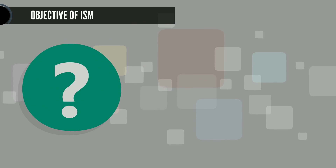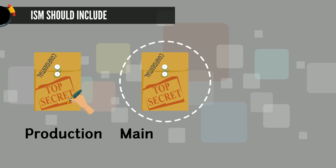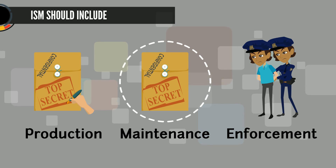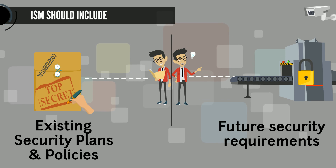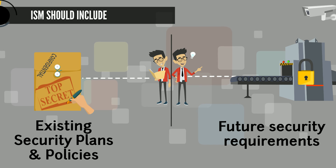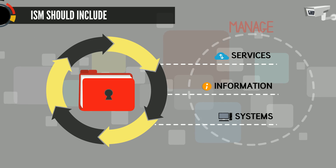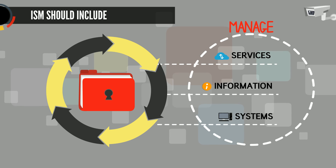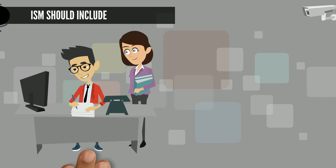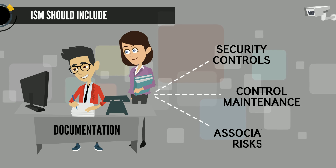What should be included in an ISM? The ISM process should include the production, maintenance, distribution and enforcement of an information security policy and supporting security policies. It should also cover understanding the agreed, current and future security requirements of the business and the existing business security policy and plans. Additionally, it should include implementation of a set of security controls that support the information security policy and manage risks associated with access to services, information and systems, along with documentation of all security controls together with the operation and maintenance of the controls and their associated risks.